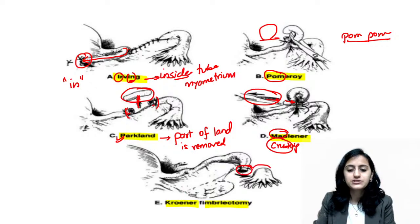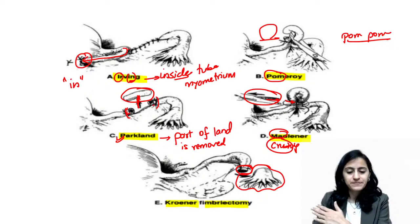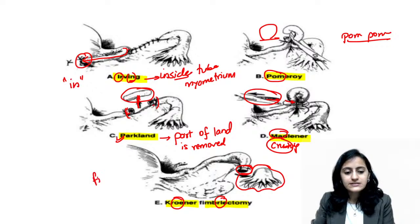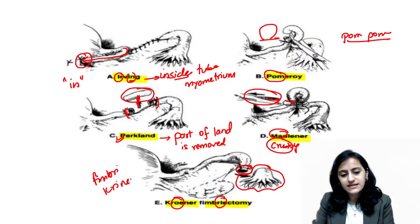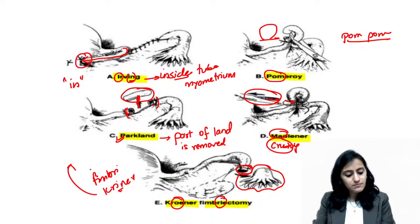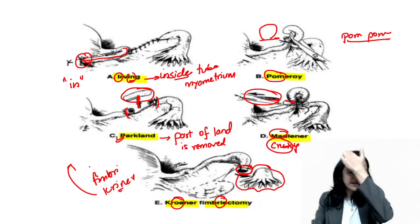For Criner's fimbrectomy, you can see here that the fimbrial end of the fallopian tube is cut. Criner's equals fimbrectomy — the spelling is different but Criner's is your fimbrectomy technique.